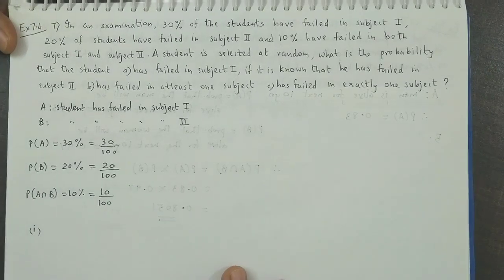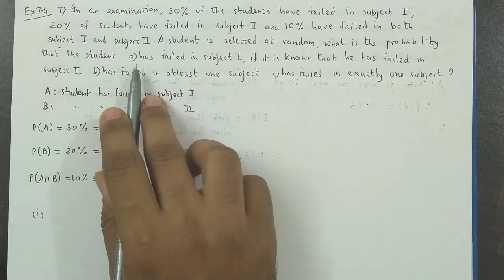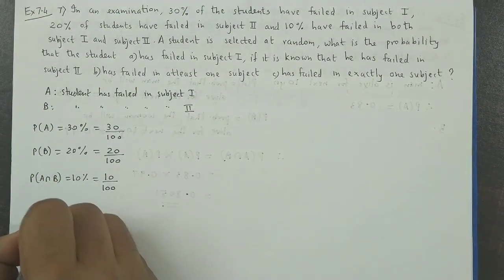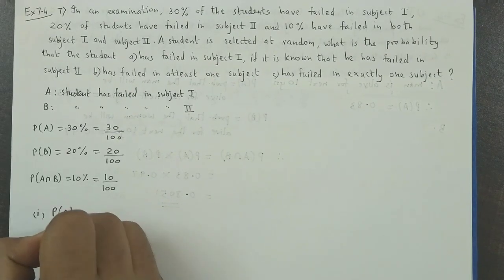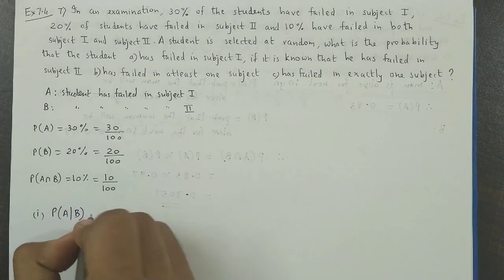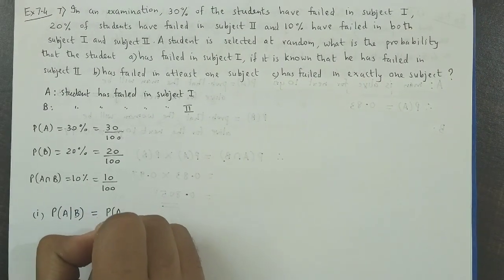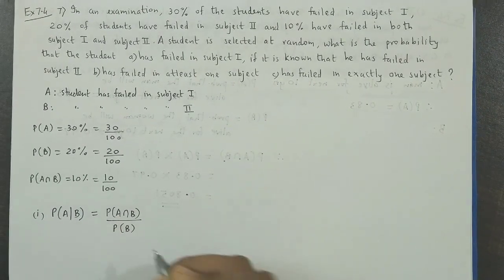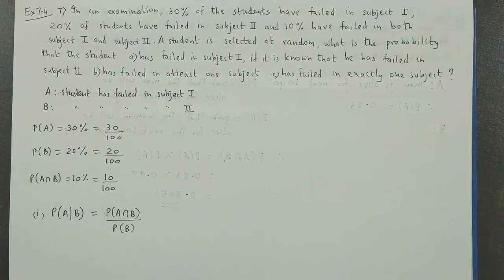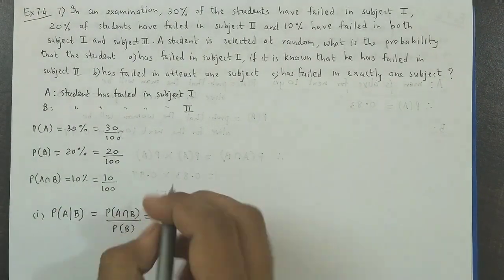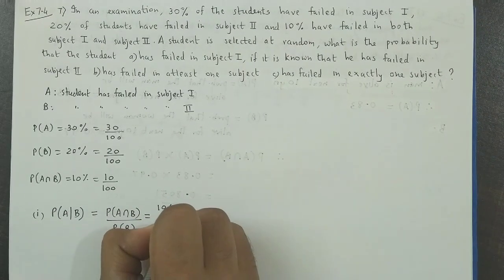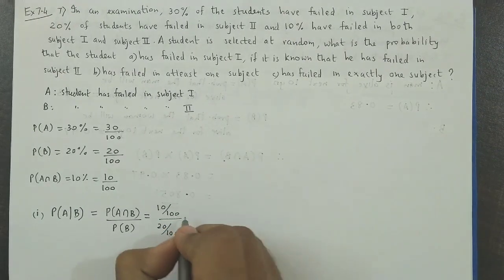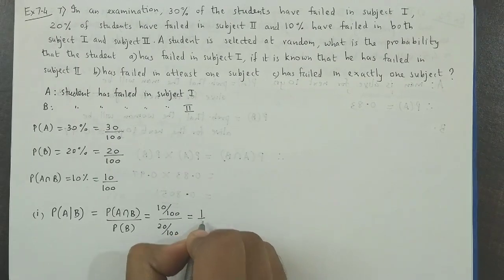The first question is: find the probability that he has failed in subject 1, given that he has failed in subject 2 — that is P(A|B). It is calculated as P(A intersection B) divided by P(B). Probability of A intersection B is 10 by 100, and probability of B is 20 by 100. On simplifying, we get the answer as one half.